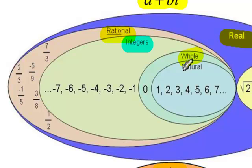And then we have the most restrictive set, which is called natural numbers. Natural numbers are basically your positive integers, so they exclude 0.